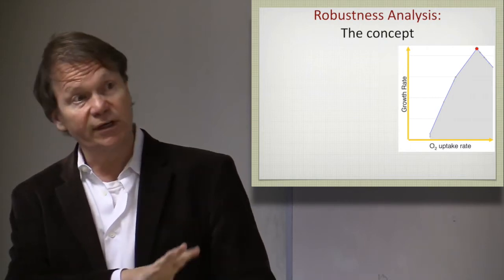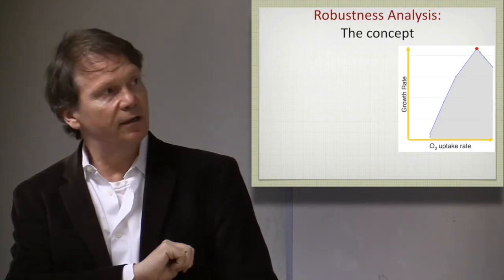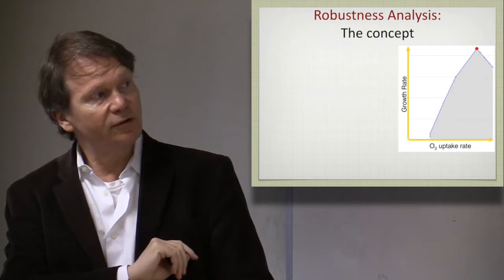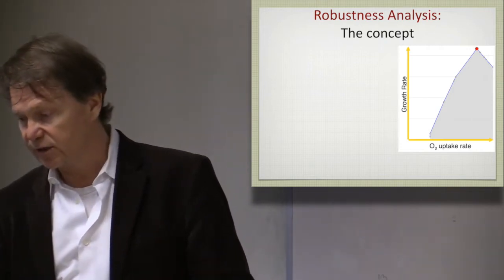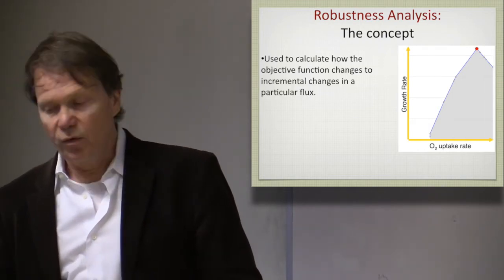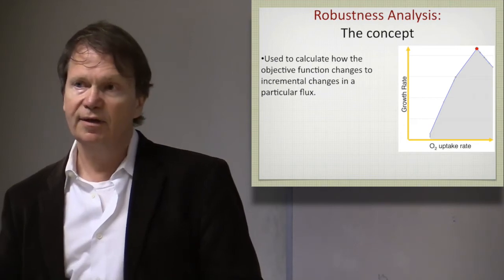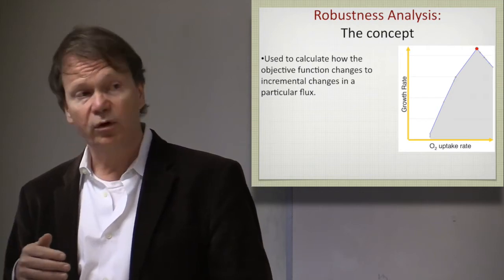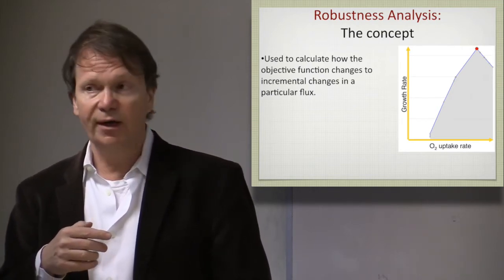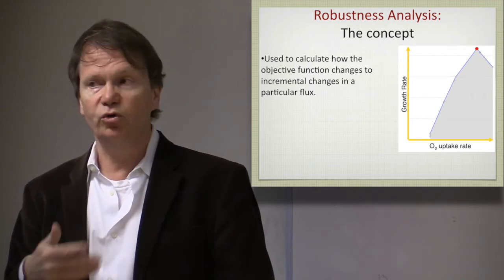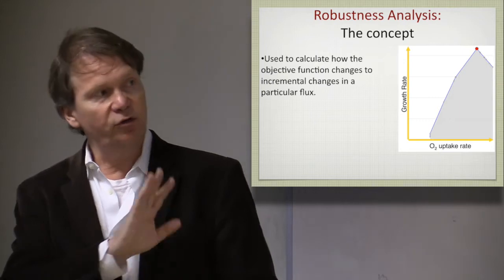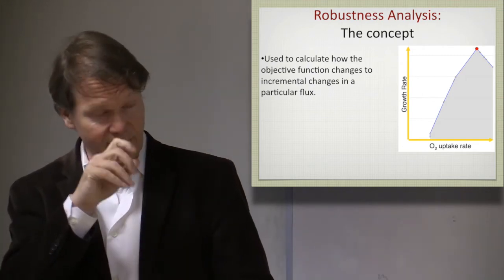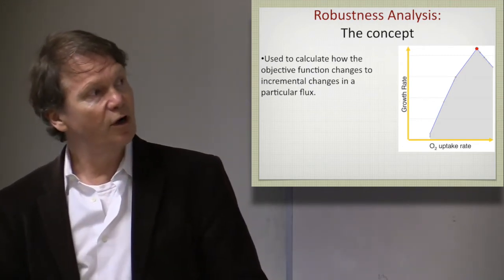Oxygen availability tends to be the most significant environmental variable, because the choice or availability of an electron acceptor is so important to the metabolic state of any organism. The fundamental idea is to increment one of these parameters, and in a computer you just run a loop, keep changing that parameter, do the optimization over and over again, and trace out the value of the objective function across a finite range of numerical values of that parameter.